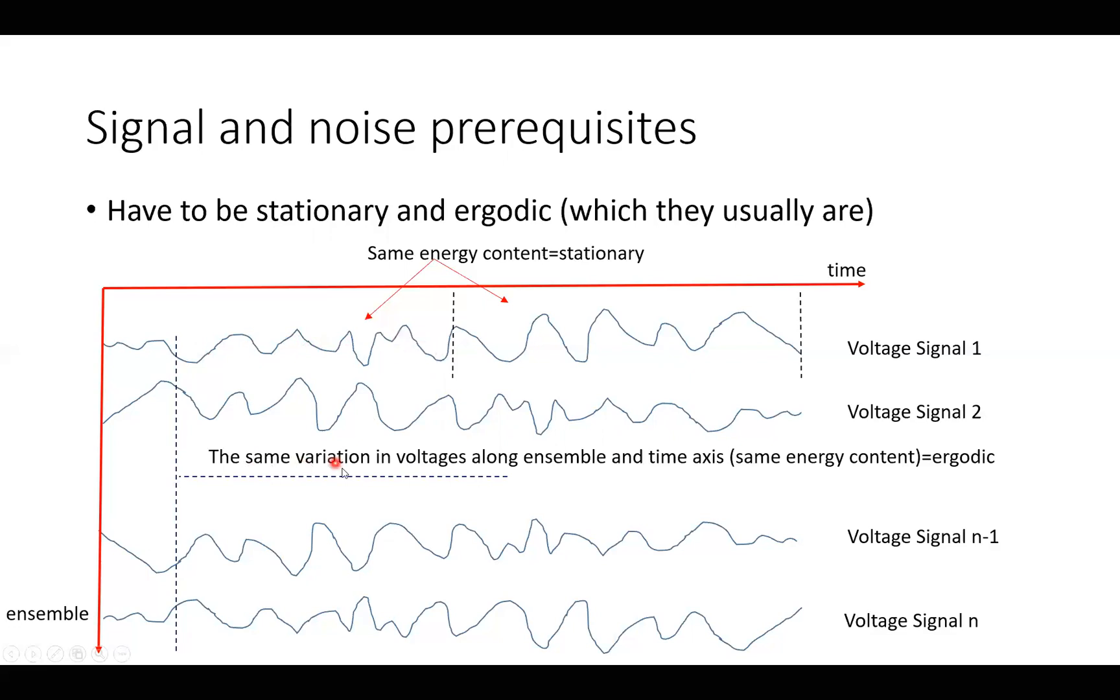The same variation in voltages along ensemble and time axis. That is the same as saying that it's ergodic. They have the same energy content whether you go down this way or you go down here.